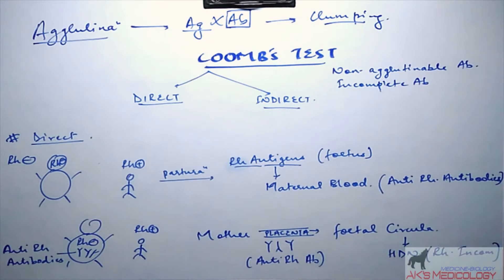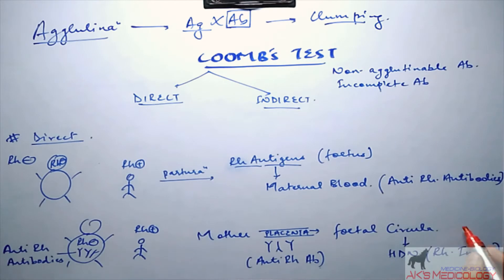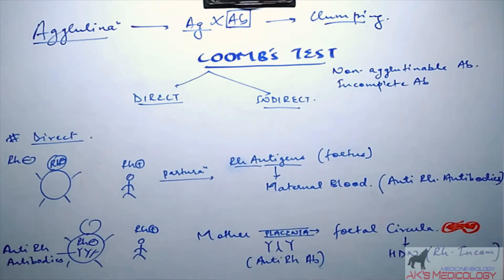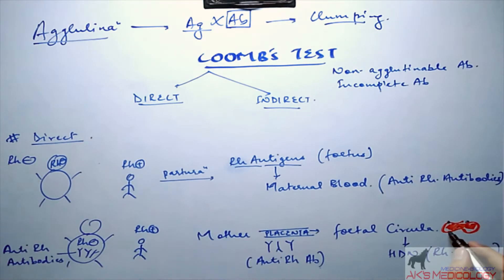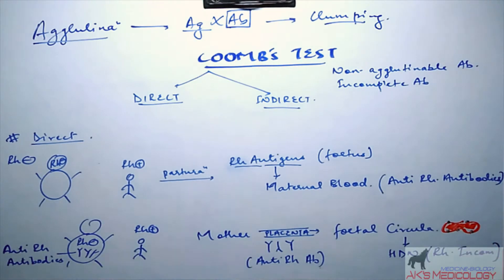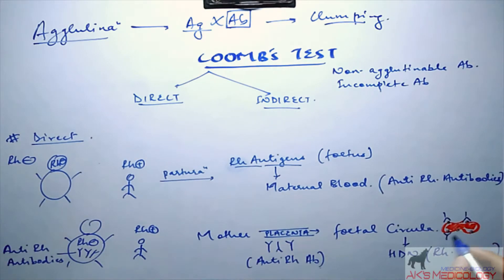Hemolytic disease of the newborn occurs because these anti-Rh antibodies attack the Rh antigen which is present over the surface of the red blood cells of the fetus, leading to hemolytic disease of the newborn.